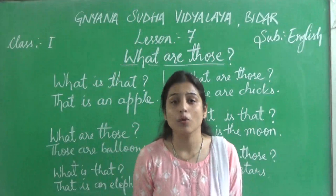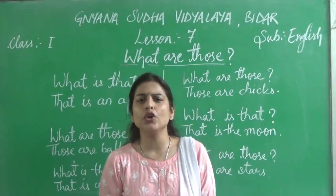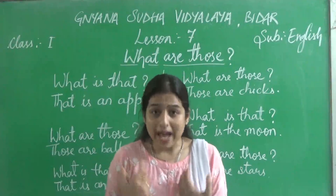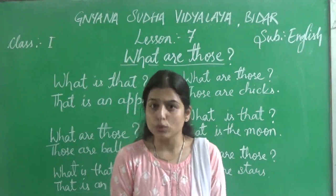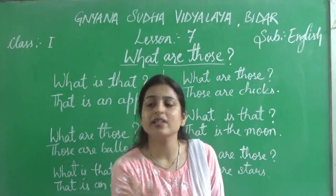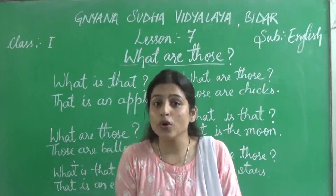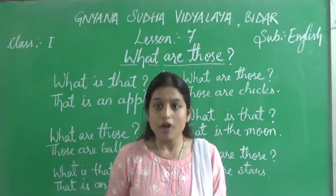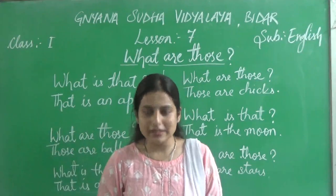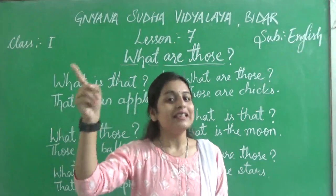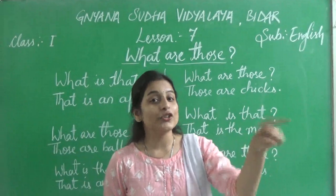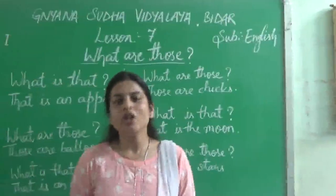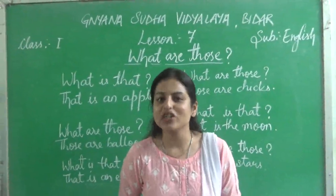I hope my students have understood where to use 'that' and where to use 'those'. We use 'that' when a single object is far from us, and we use 'those' when one or more objects or persons are far from us. For example — 'What is that? That is an apple.' 'What are those? Those are balloons.' With this, we complete our 7th chapter. Thank you.